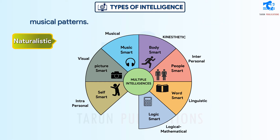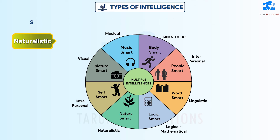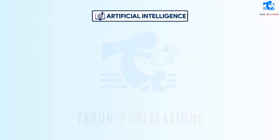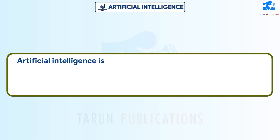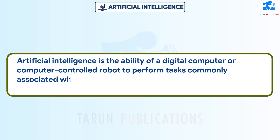A person with naturalistic intelligence will have a certain sensitivity towards natural things. Artificial Intelligence is the ability of a digital computer or computer-controlled robot to perform tasks commonly associated with intelligent beings.